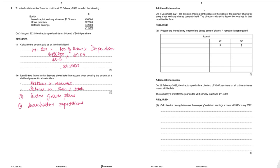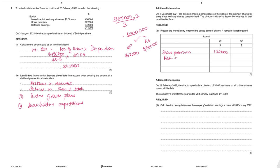On 1st December 2021, directors made a bonus issue of two ordinary shares for every three held, with reserves kept in the most flexible form. Current share capital = $450,000. Bonus issue value = $450,000 ÷ 3 × 2 = $300,000 of new shares. Most flexible reserves means using share premium first ($122,000), then retained earnings ($178,000). Journal entry: debit share premium $122,000, debit retained earnings $178,000, credit ordinary share capital $300,000.